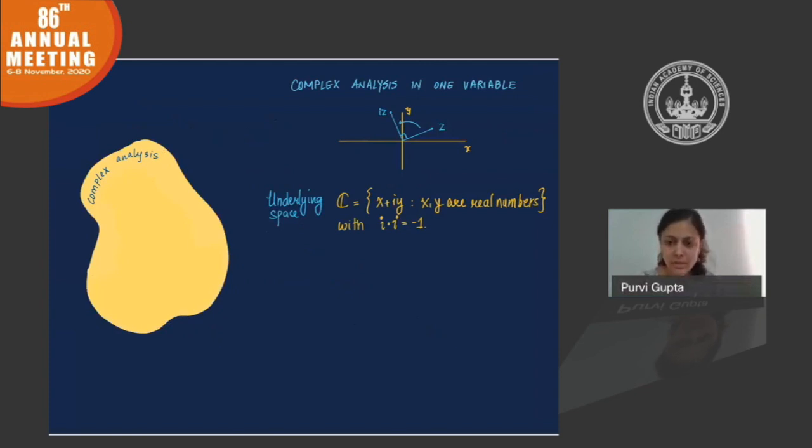Geometrically, complex numbers can be represented as two-dimensional real vectors, and multiplying the complex number by the square root of minus 1 has the effect of rotating the corresponding vector counterclockwise by 90 degrees. This simple geometric slash algebraic structure allows us to do a new kind of calculus.